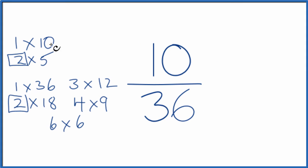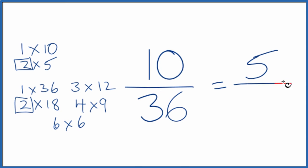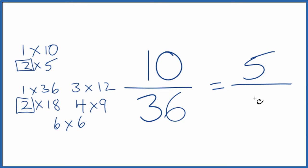10 divided by 2 is 5, and 36 divided by 2 is 18. So we've simplified the fraction 10/36 down to 5/18.